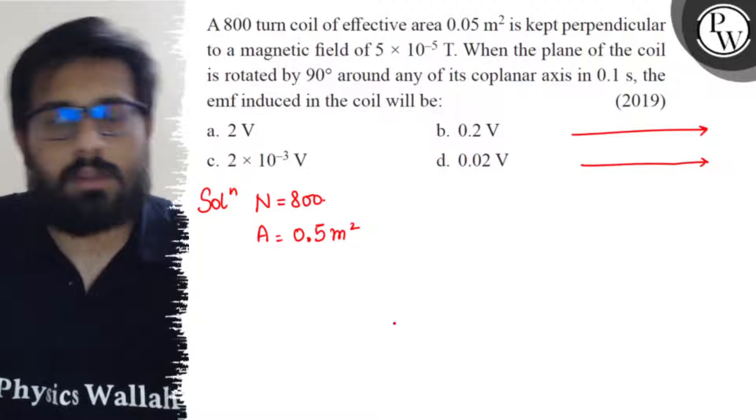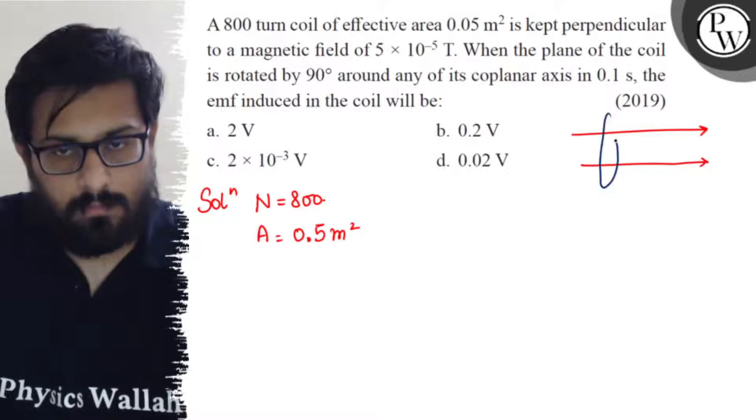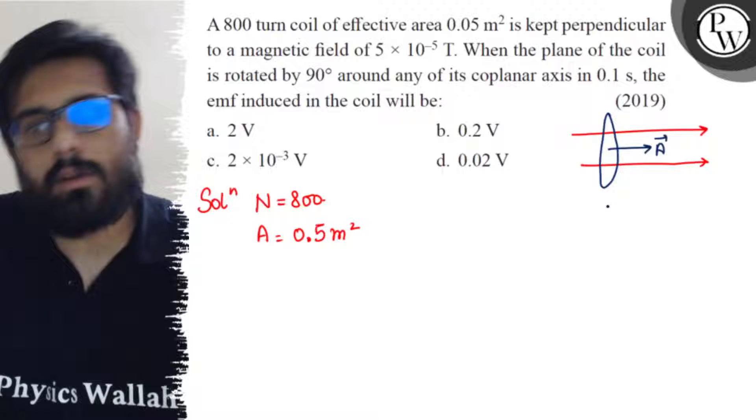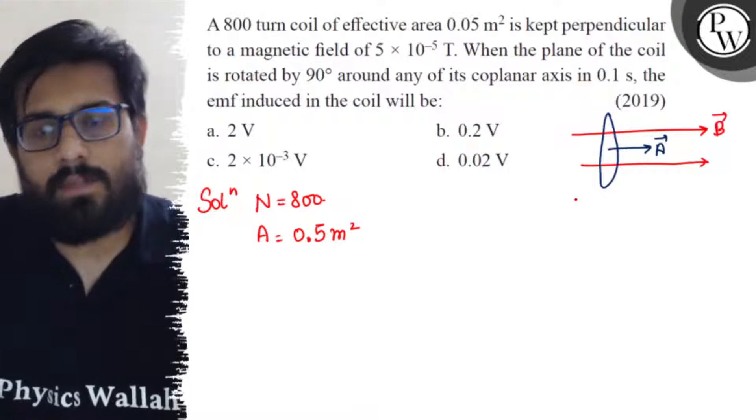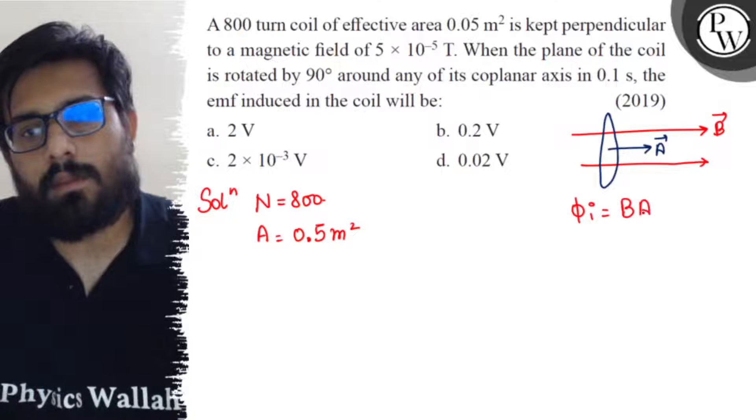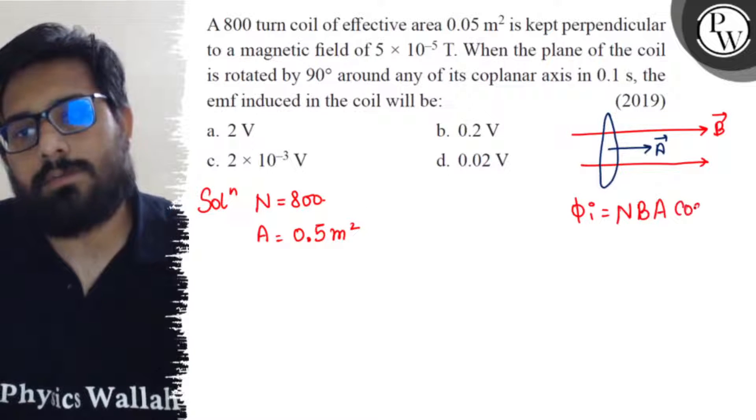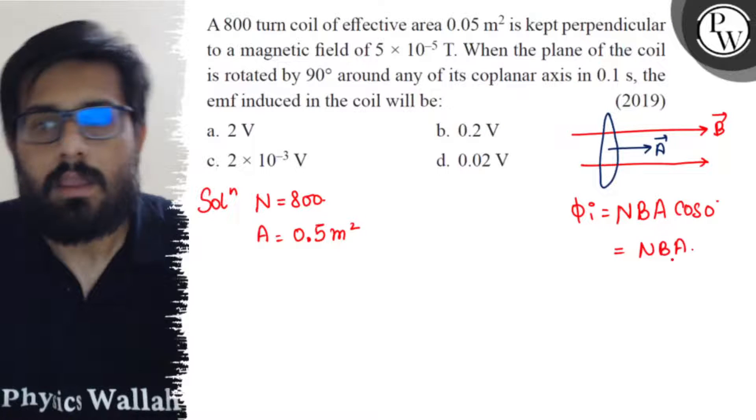Suppose magnetic field is like this, so the coil is kept like this with area vector here, and magnetic field is in a particular direction. So you have the value of initial flux as NBA cos 0°, which comes out to be NBA.